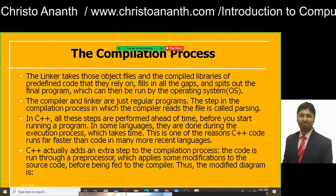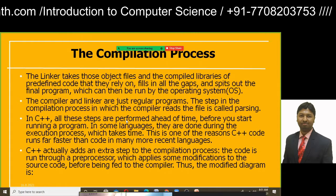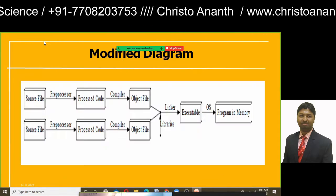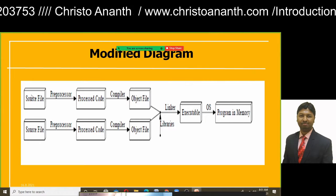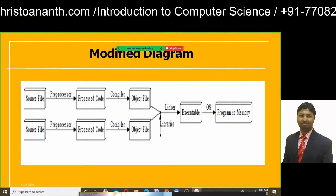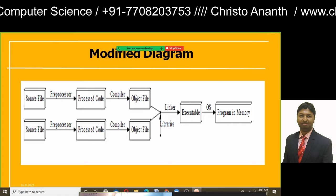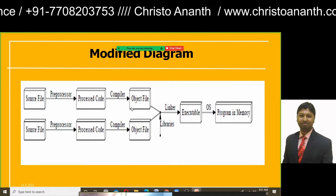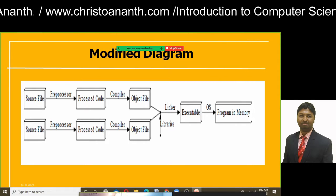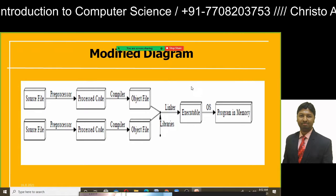The source files, before going into the general code, are fed to the preprocessor, then to the compiler, which compiles and identifies missing parts. Then it goes to the object file, then to the linker where it accesses different low-level and medium-level libraries. After that, it executes via executables, then goes to the operating system, where the program is loaded into memory.